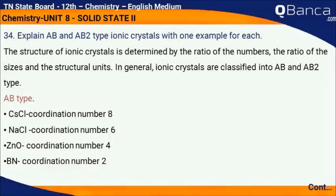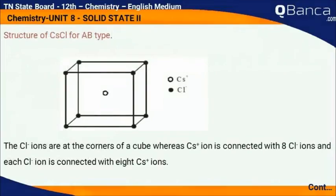AB type examples with coordination numbers: CsCl — coordination number 8; NaCl — coordination number 6; ZnO — coordination number 4; BN — coordination number 2. Structure of CsCl for AB type.